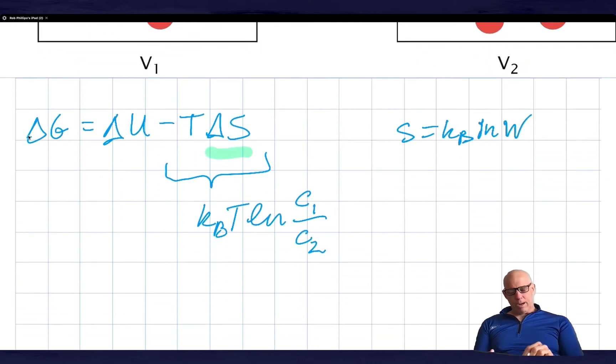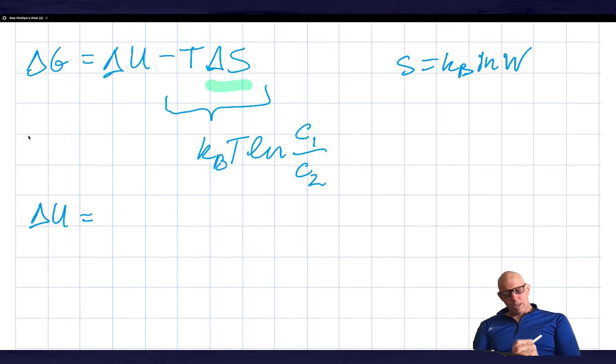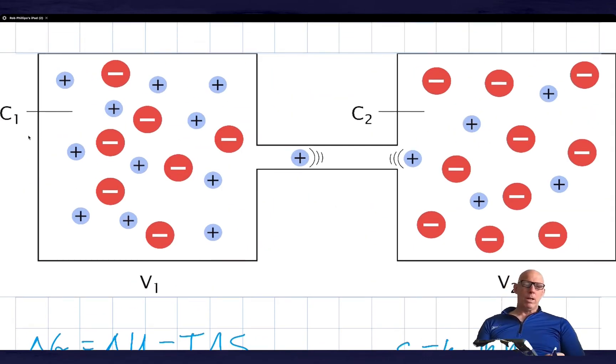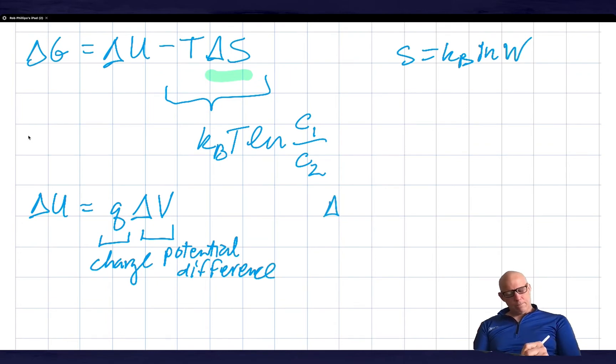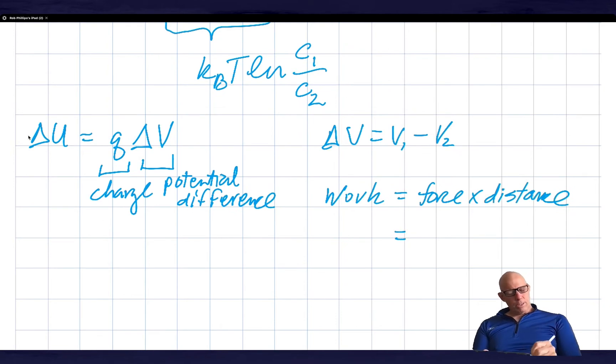So what about the delta U? The delta U is equal to Q delta V, so this is the charge on the ion of interest and this is the potential difference between my two reservoirs. If the reservoir on the left is held at potential V1 and the reservoir on the right is held at potential V2, then the potential difference delta V is equal to V1 minus V2. I remind you that work is equal to force times distance. The force is equal to Q times E where E is the electric field, so this is the force which is the electric field times the charge.